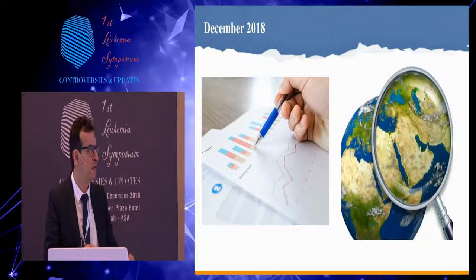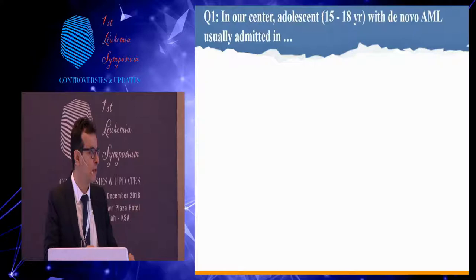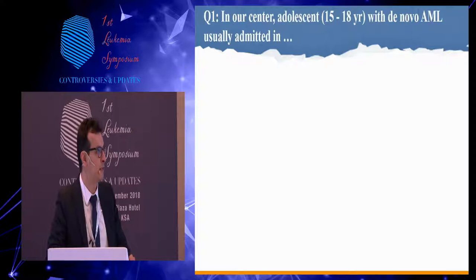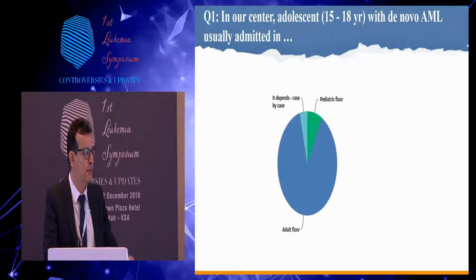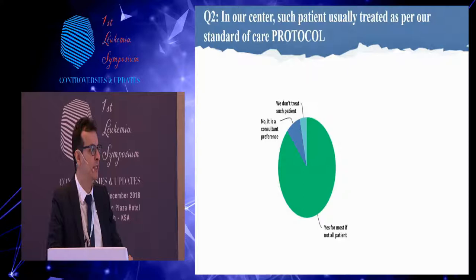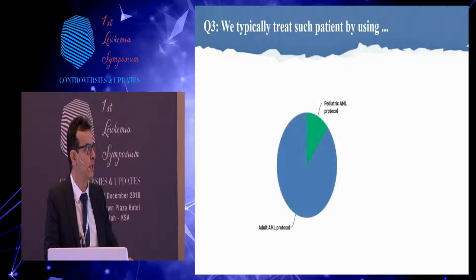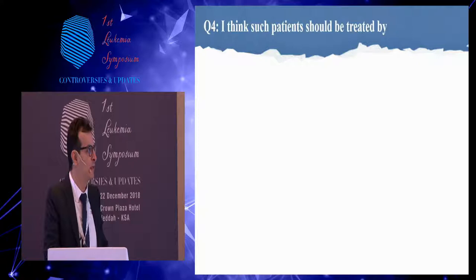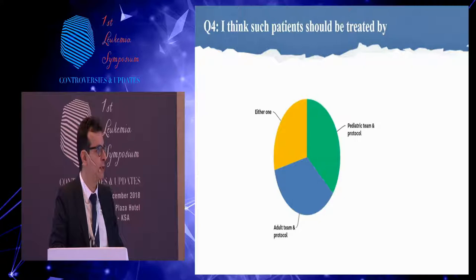To answer this question, in preparation for this talk, we sent a national survey to our adult hematologists. The first question asked where patients aged 15 to 18 with a diagnosis of AML are usually admitted. The majority, as expected, are admitted to the adult floor — this is how the Ministry of Health and other hospitals work: anyone 14 and above goes to adult. Most such patients were treated on protocols, typically by the adult AML protocol, with a minority by the pediatric one. When asked which approach should be used, one-third said adult, one-third said pediatric, and one-third said either one.